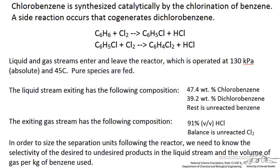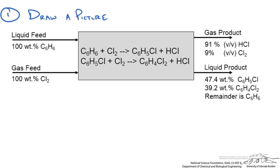We have a good old-fashioned material balance problem and we need to go through our steps in solving this. The first thing to do is draw a nice schematic and label everything we know about our streams. Here I have drawn a schematic that shows our liquid feed of 100 weight percent benzene coming in and our gas feed of 100 weight percent chlorine. We have our two reactions and the outlet streams labeled using the appropriate information given in the problem statement.